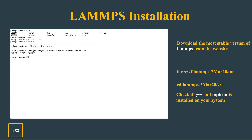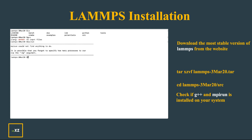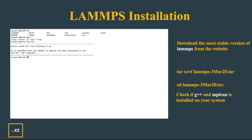I press g++ and mpirun to check whether they are installed. If g++ shows 'no input files', then g++ is installed. When you press mpirun, if it says 'mpirun could not find anything to do', it means mpirun is already installed in your system. Make sure that you install both of these.